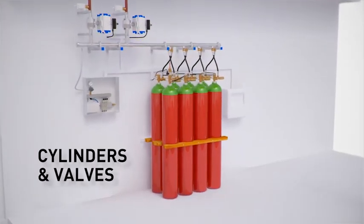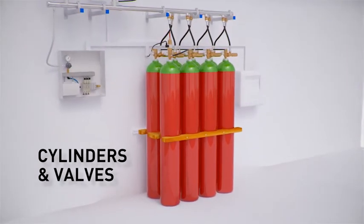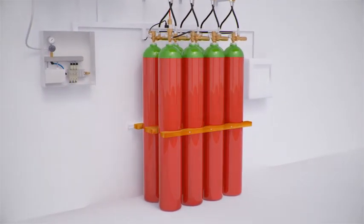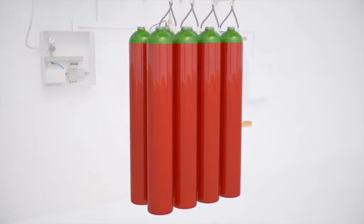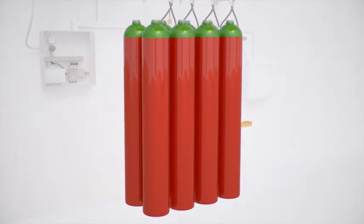Inert gas is stored at 200 bar or 300 bar pressure in large cylinders, 80 and 140 liter sizes, and are stored in a safe place outside of the protection zone. The number of cylinders depends on the area of zone being protected.